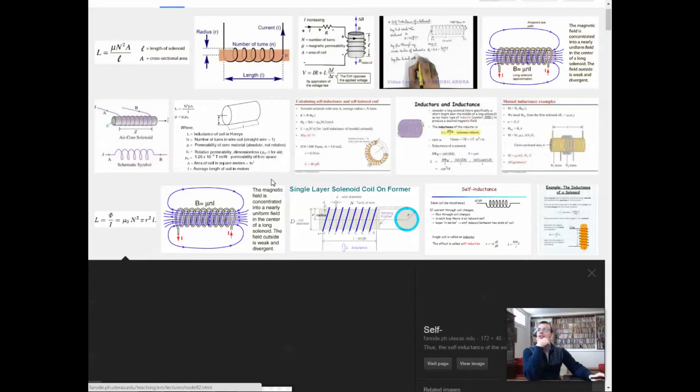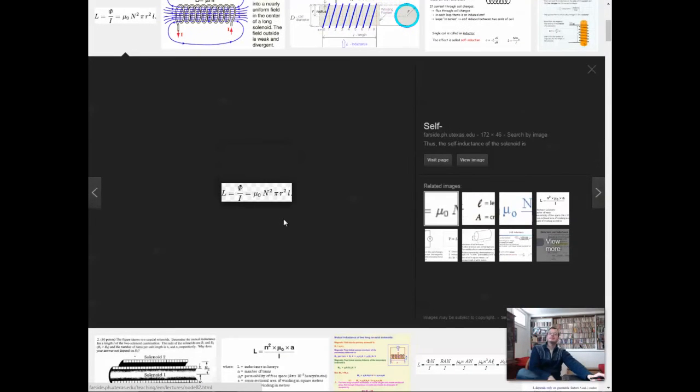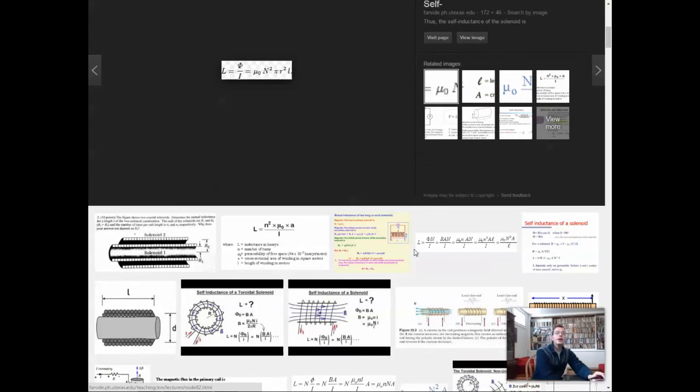Let's see here. Mu-naught, n-squared, a, times l. Did I? Divided by l. Should it be divided by l? I'm going to say yeah, mu-naught, n-squared, a, over l.